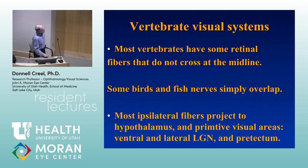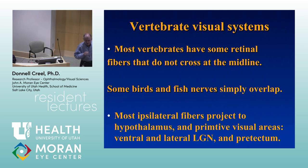In animals lower than mammals, most ipsilateral fibers only project to primitive areas — the hypothalamus, the primitive portions of the lateral geniculate (not the dorsolateral geniculate), and to pre-tectum areas that control eye movement and coordination with all of the brainstem connections. Because they lack neocortex, they don't have projections onto the cortical surface.